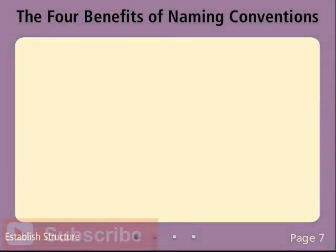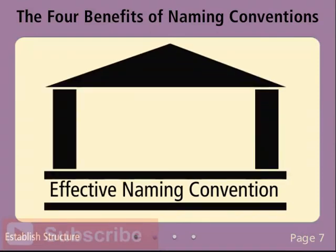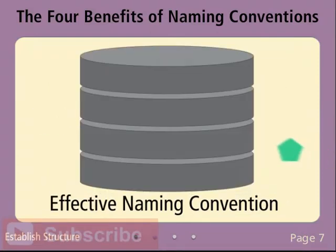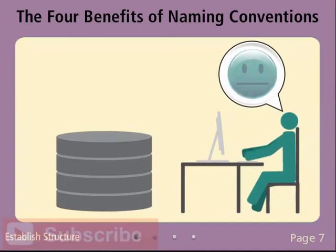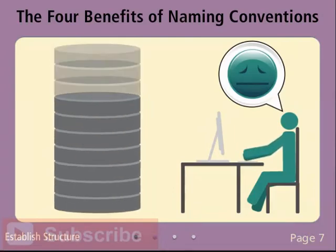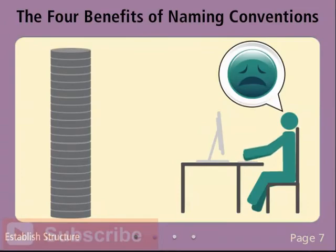Establish Structure: An effective naming convention will build a structure that can be easily scaled. As more objects are added to a database, the more important it is to have a consistent structure. While it may be possible to work around inconsistent table and column names in a database with three or four tables, it certainly is not ideal. In a database with hundreds of tables and columns, inconsistency equals chaos — and databases and chaos do not mix.